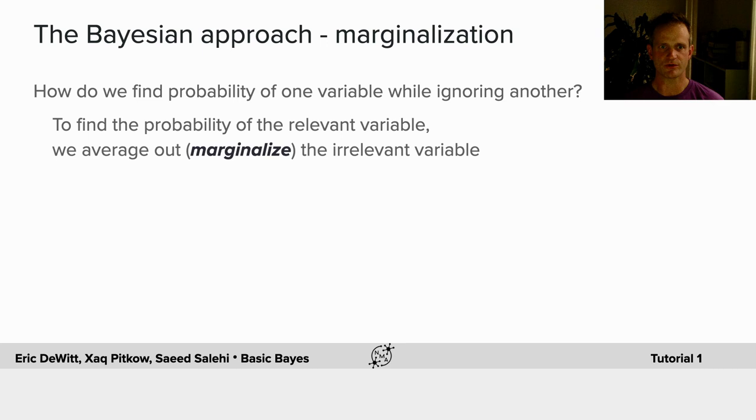When do we find the probability of one variable while ignoring another? To find the probability of the relevant variable, we need to average out or marginalize the irrelevant variable.